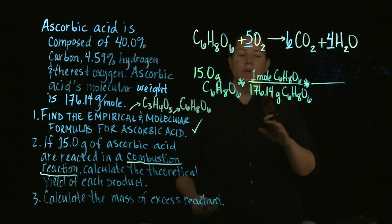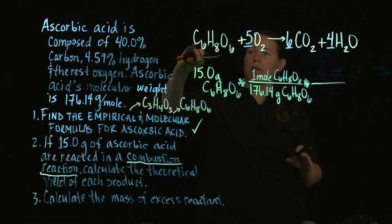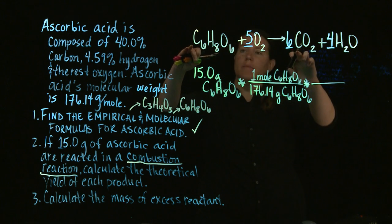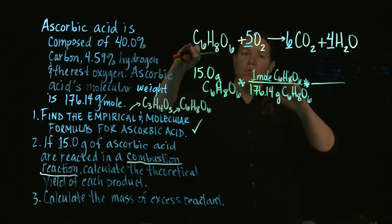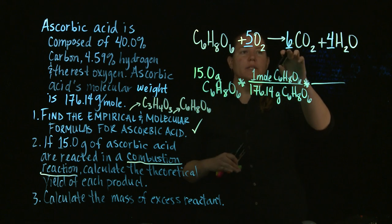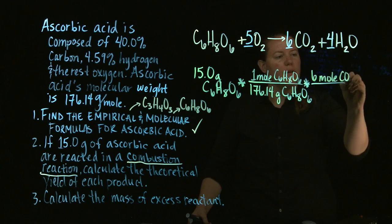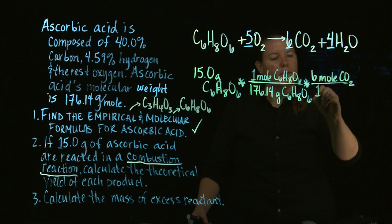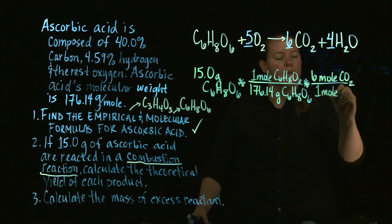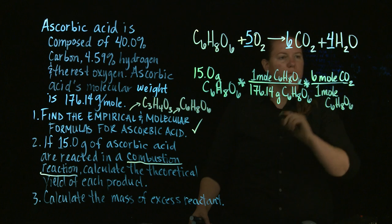Okay? So my ratio, now I can set up a ratio between ascorbic acid and carbon dioxide. And I see every time I use one mole of ascorbic acid, I make six moles of carbon dioxide. And I'm going to write the ascorbic acid down here, because it's taking a lot of room.